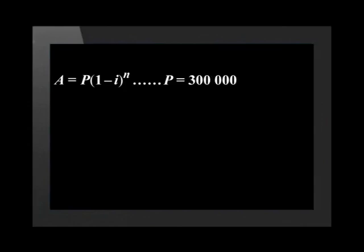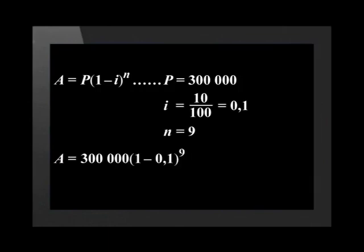With P equal to 300,000, i equal to 10 divided by 100 which equals 0.1, and n equal to 9. Substituting these values into the equation gives us A equals 300,000 bracket 1 minus 0.1 bracket to the power of 9.